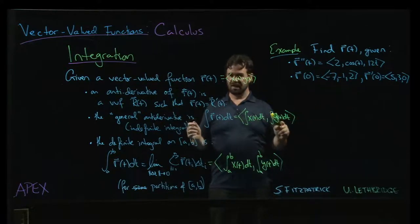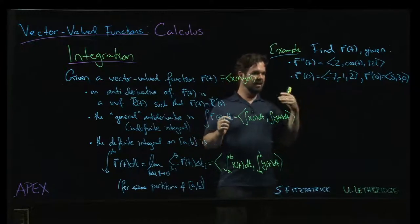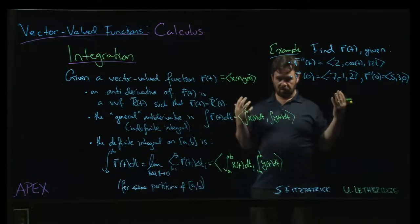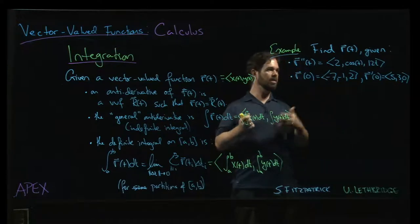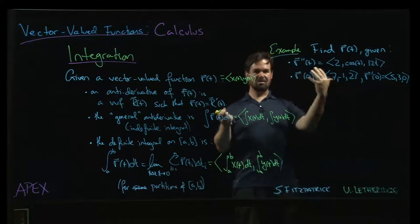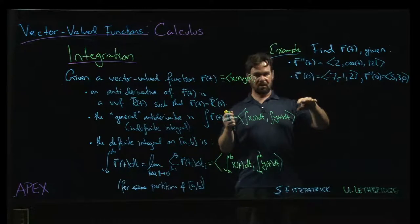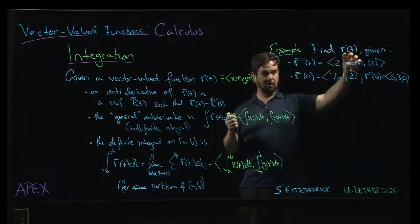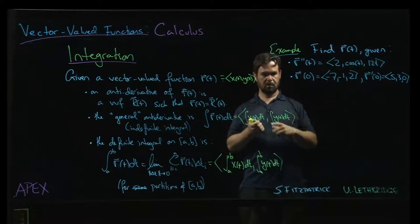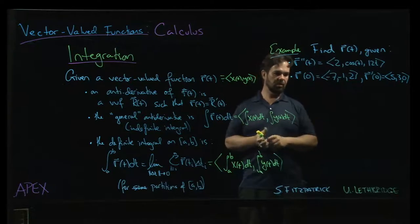We get our sort of arbitrary constant of integration. Be a different one for each, right? And then we can apply our initial conditions to figure out what those constants should be. So really, it's three initial value problems in one, because we're going to do one for the x component, one for the y component, and one for the z component. But we'll try to do them all at the same time, right?